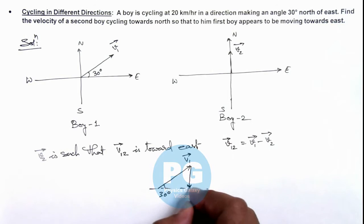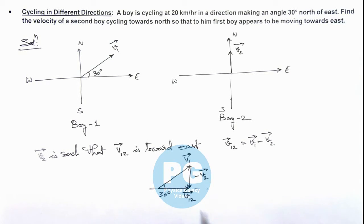So this would be the direction of minus v2 vector, and this minus v2 is such that the resultant would be along east. This should be velocity of 1 with respect to 2.